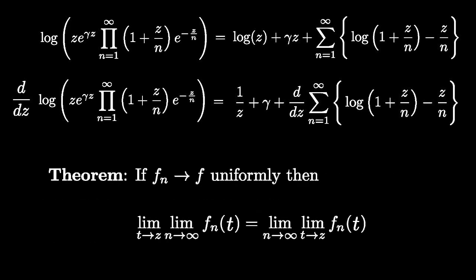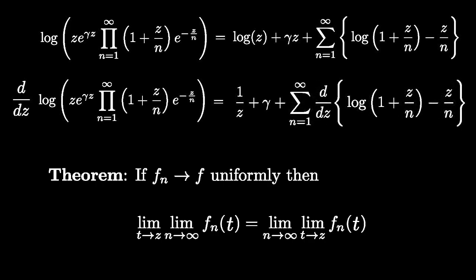If a sequence of functions converges uniformly, then this theorem allows us to interchange the order of taking the limits, and this allows us to take the derivative under the summation sign, because this sum converges uniformly, as we have previously shown in this video.